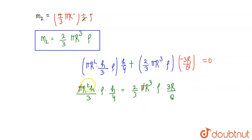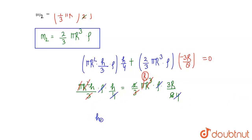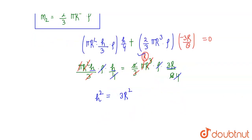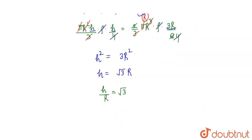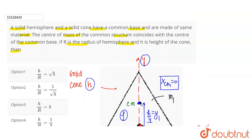Cancellations के बाद equation बनती है: h² = 3R²। इससे h = √3 · R, यानी h/R = √3। तो यह हमारे इस question का answer है: h/r = √3। Option number one correct answer है।